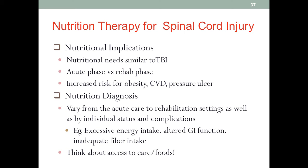During the rehab phase, survivors will have an increased risk for obesity, heart disease, and pressure ulcers. The problems used in the PES statement for SCI patients vary from the acute care to the rehabilitation setting because the pathophysiology in the two phases is different, and therefore the nutrition needs are different.